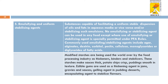In some food products, modified starches are also used as food emulsifying agents and also as thickeners, binders, and stabilizers. These are used in products such as sauces to make them thick, or potato chips to make them crisp, and in puddings to achieve a smooth texture. Edible gums are also used as thickening agents in jams, gravies, and sauces; as gelling agents in puddings and desserts; and as encapsulating agents to stabilize flavors in food products.